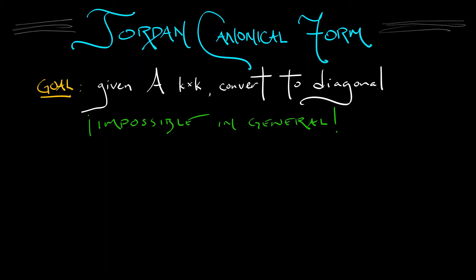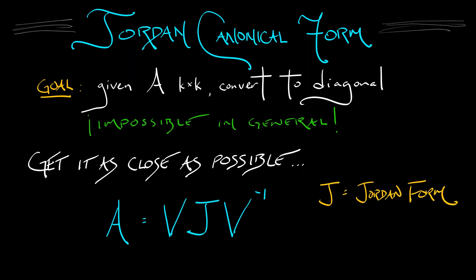we can get it as close as possible by a well-chosen coordinate change. Using a matrix V of eigenvectors and generalized eigenvectors, we can rewrite A as VJV⁻¹, where J is the Jordan form, the matrix that is as close to being diagonal as possible.